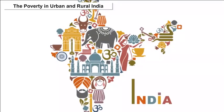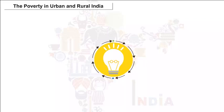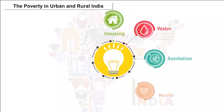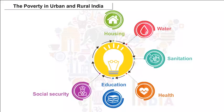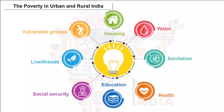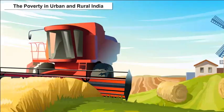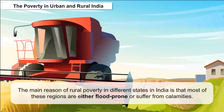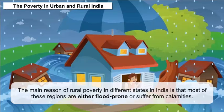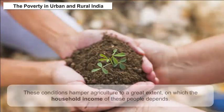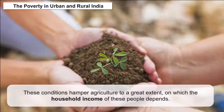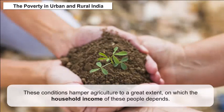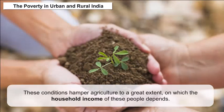The nature of urban poverty poses distinct challenges for housing, water, sanitation, health, education, social security, livelihoods, and the special needs of vulnerable groups such as women, children, and the ageing. The main reason for rural poverty in different states in India is that most of these regions are either flood-prone or suffer from calamities. These conditions hamper agriculture to a great extent, on which the household income of these people depends.